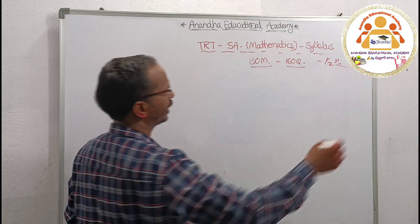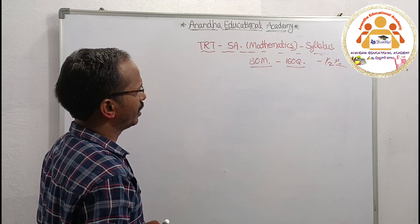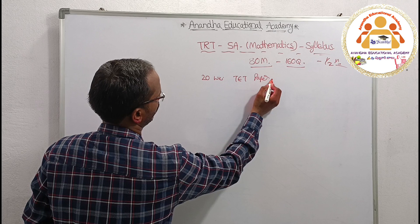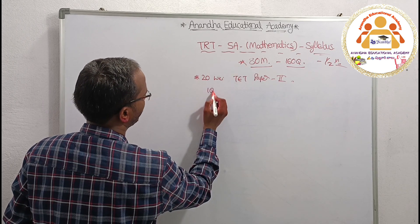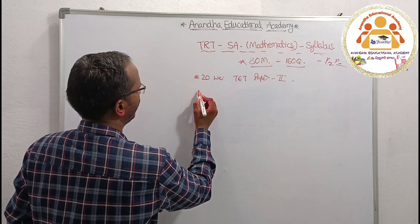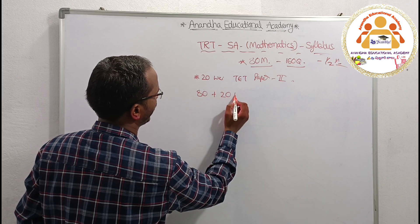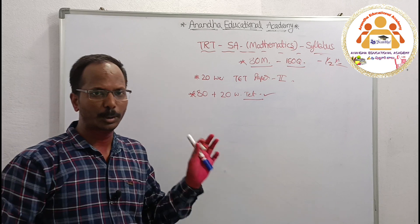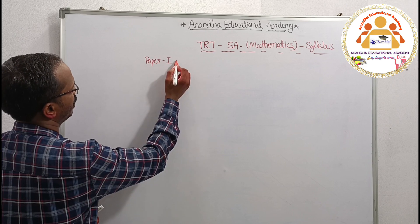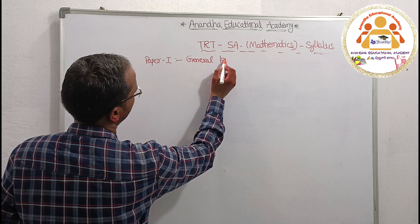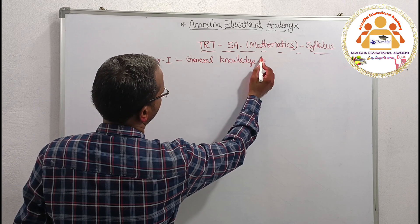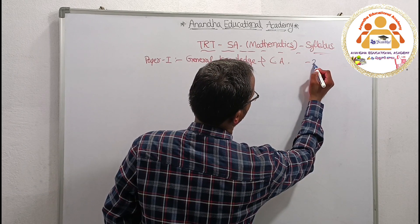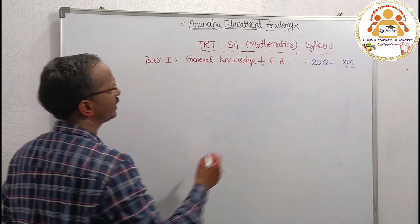Each question carries half a mark. There is a 20 marks weightage from Paper 2. Total is 100 marks. After the TRT School Assistant Mathematics result, the marks plus 20 weightage from the state are used to make the seniority list to determine who has a chance to get the job.